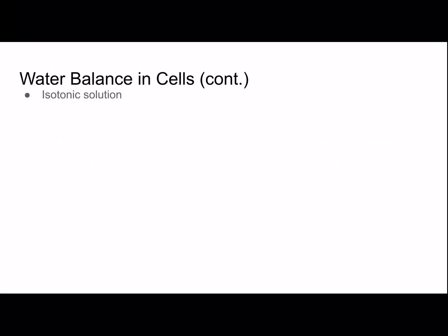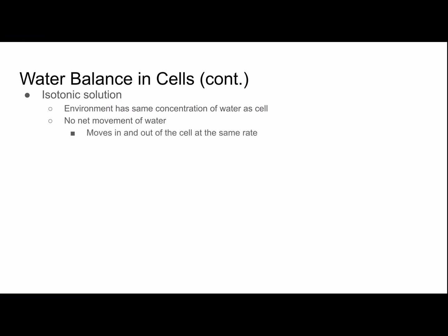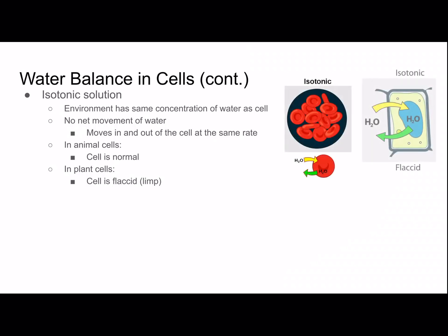Isotonic solutions are where the environment has the same concentration of water as the cell, so there's no net movement of water — it moves in and out at the same rate. In animal cells the cell is normal in this solution. However in plant cells the cell is flaccid, which means limp. Here's a red blood cell and a plant cell in an isotonic solution.